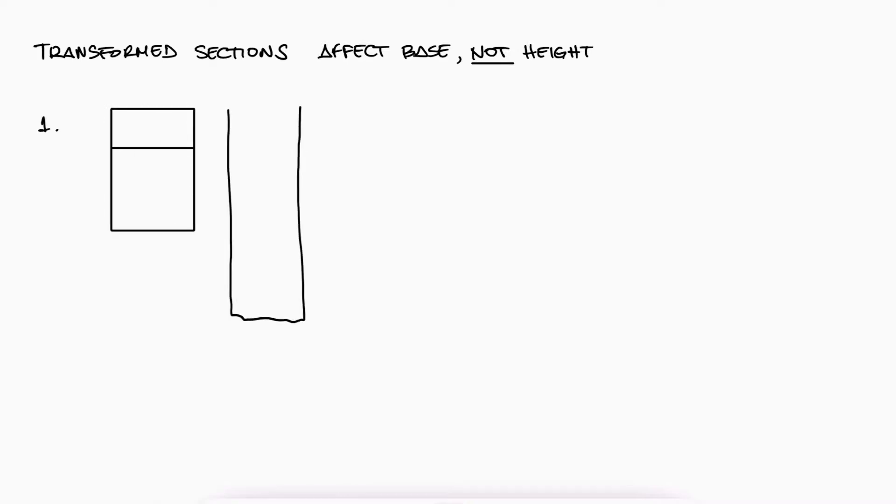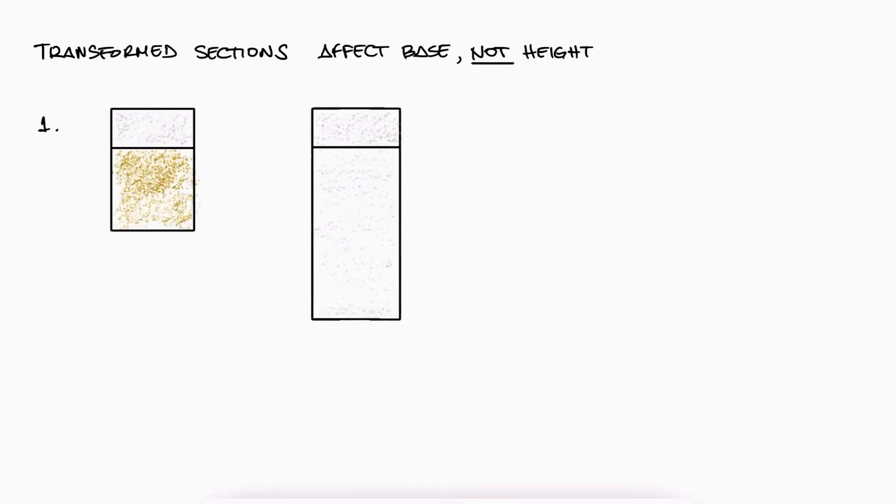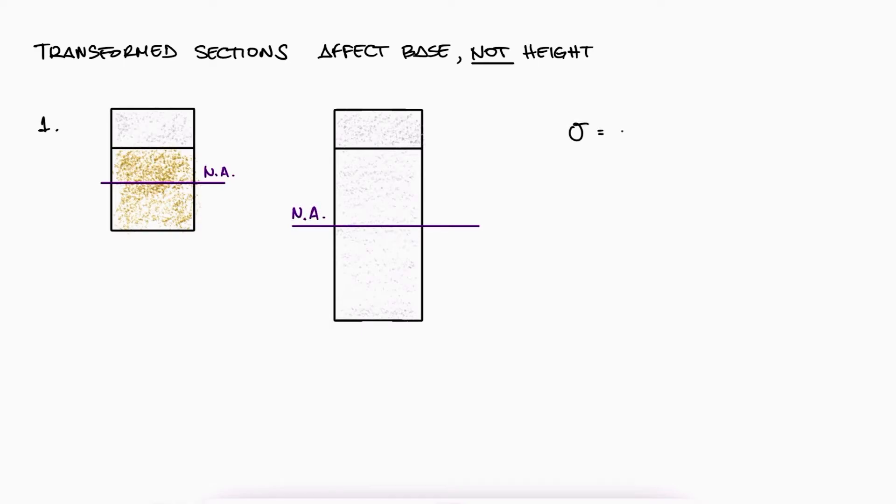If we were transforming the height h to compensate for the different elastic modulus, we would be effectively modifying the location of the neutral axis, which throws off all remaining calculations as all of them rely on the neutral axis location. More importantly, if the neutral axis is moved because of our modifications to the model, it would no longer be representative of what is actually happening with the original cross section.